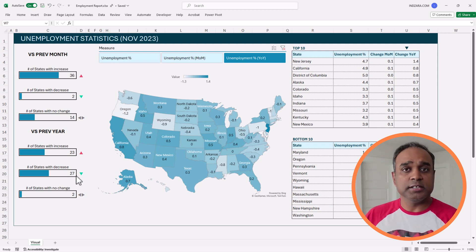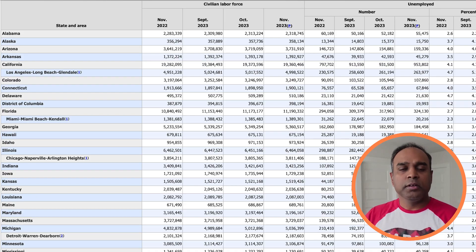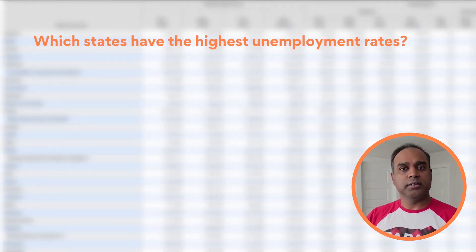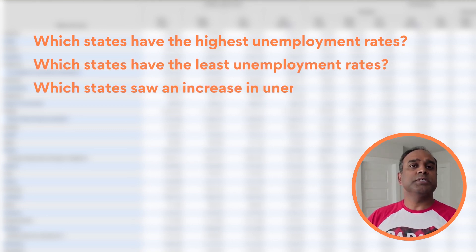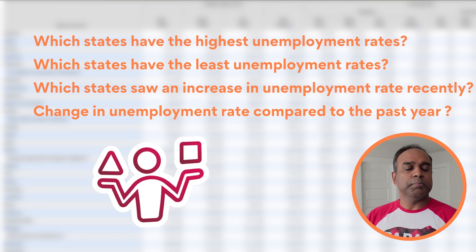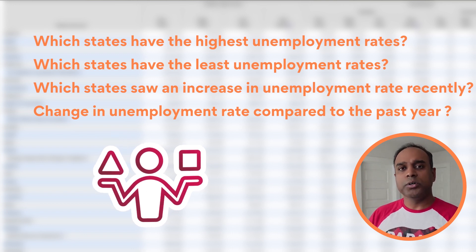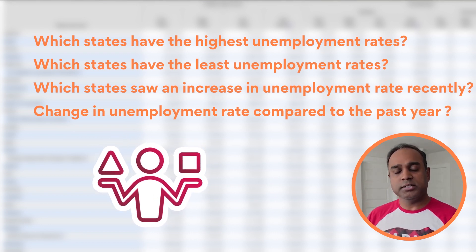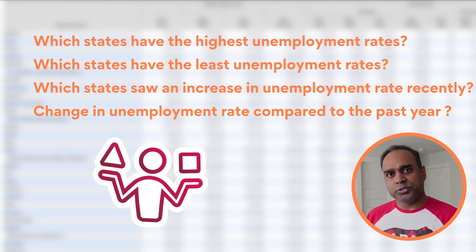What you see on screen is the final output, which provides answers to the key questions on this topic. When we look at the raw data, some of the questions we need answers to are: which states have the highest unemployment rate, which states have the least unemployment rate, which states have seen an increase in unemployment rate recently, and the change in unemployment rates compared to the past year. For example, we are dealing with November 2023 data and want to know which states have seen an increase or decrease compared to November 2022. These are the basic questions we want to answer in an effective manner.